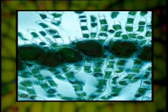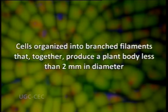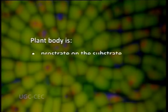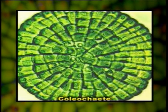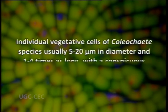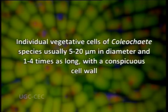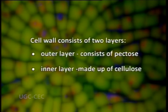Now we come to cell structure. The cells of the thallus may be quadrangular, polygonal, or cylindrical. They are organized into branched filaments that together produce a plant body less than two millimeters in diameter, which is prostrate on or embedded in the substrate. In some species the filaments are laterally compressed, forming a circular thallus with no apparent gaps between cells. Individual vegetative cells are usually 5 to 20 micrometers in diameter, one to four times as long, with a conspicuous cell wall.